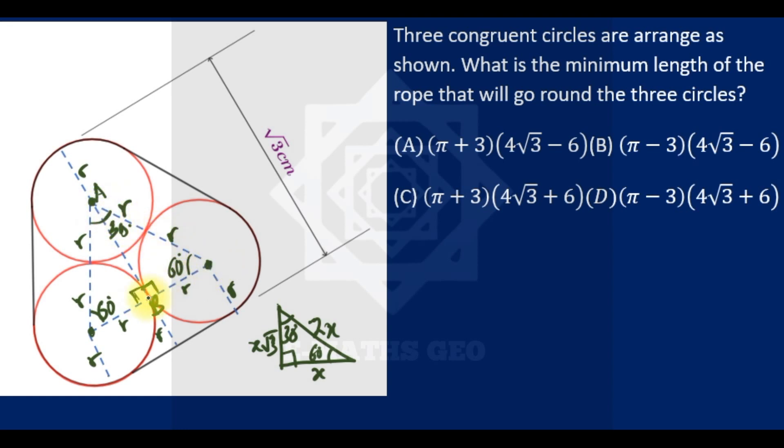With that knowledge, since this length is 2R and this is R, therefore AB will be R√3. So if AB is R√3, and they gave us this length to be √3, meaning that R + R√3 + R is equal to √3.